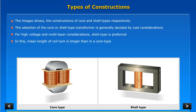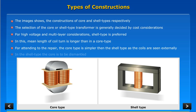In this, the mean length of coil turn is longer than in a core type. For attending to the repair, the core type is simpler than the shell type as the coils are seen externally. In the shell type, the core is to be dismantled.